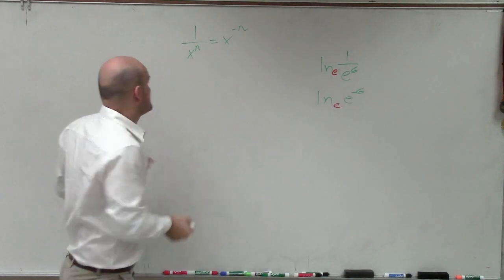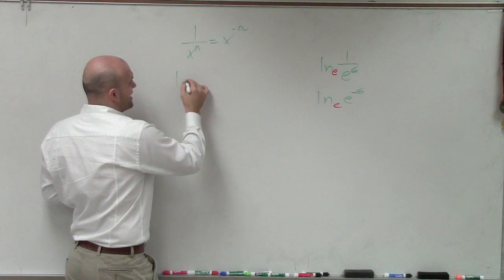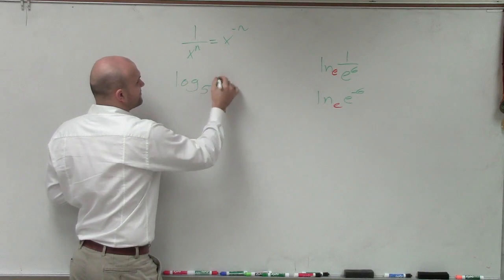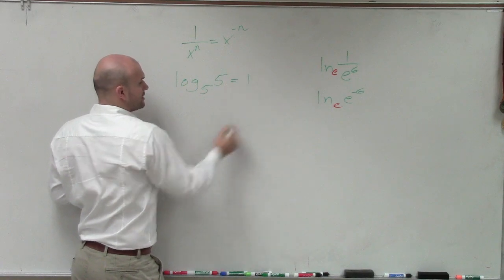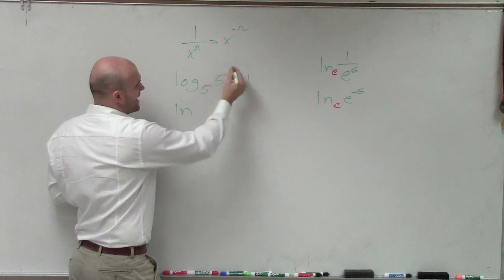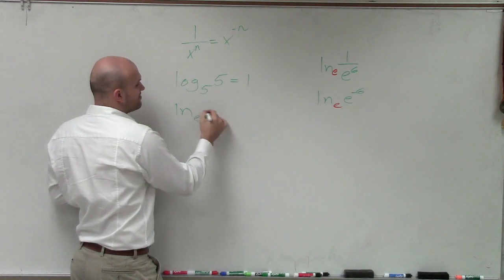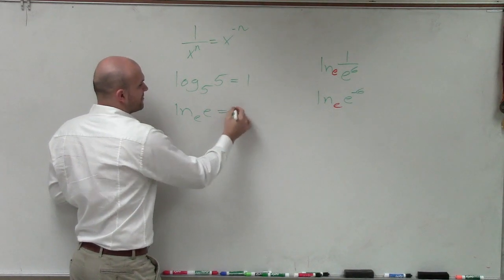Now, going back to using our properties of logarithms, if I had log base 5 of 5, well, that just equals 1. And that's the same case for any base. Even if I had ln base e of e, that equals 1.